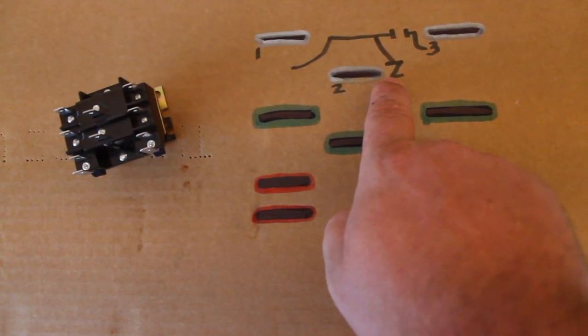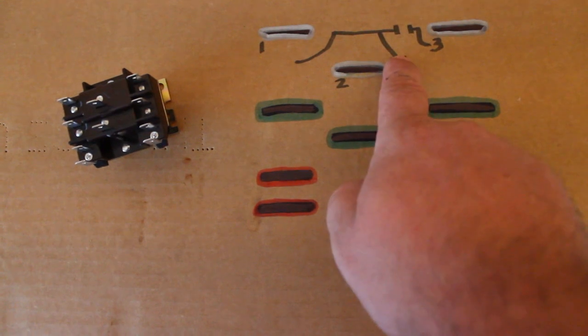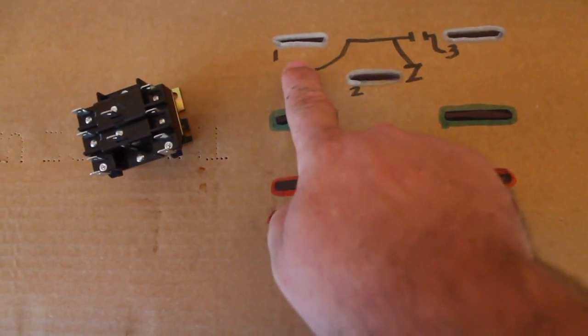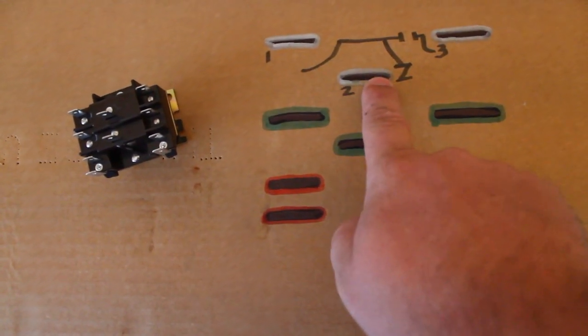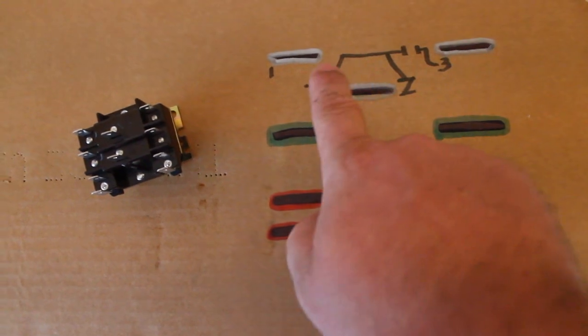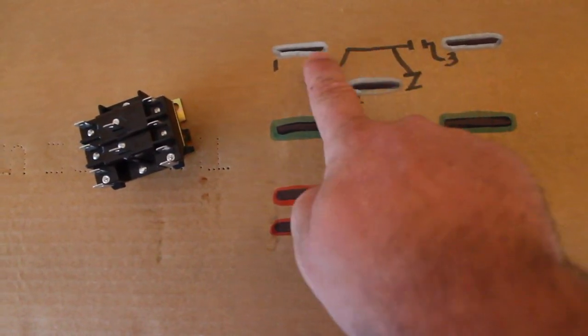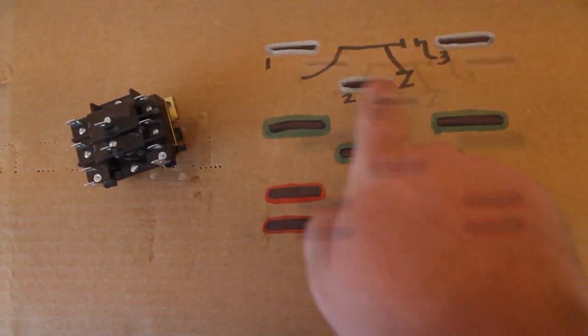You see the symbol here, it's just like the open symbol except there's a slash through it, meaning it's normally closed between one and two. So as you see, it's normally open between three and one, normally closed between two and one.